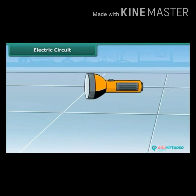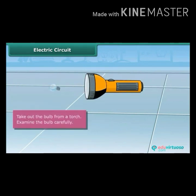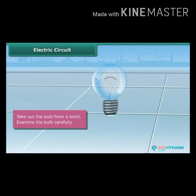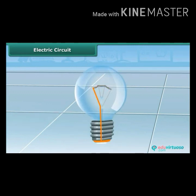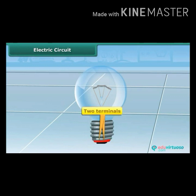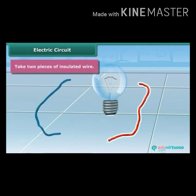For a bulb to glow, let's look inside a torch. Take out the bulb and examine it carefully. The bulb is a small globe of thin glass inside which a coil filament is fixed on two thick wires. One thick wire is connected to the metal case around the base of the bulb, and the other wire is connected to the metal tip at the base. These are the two terminals of the bulb.